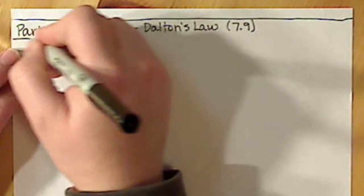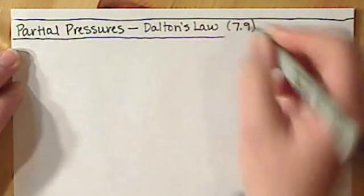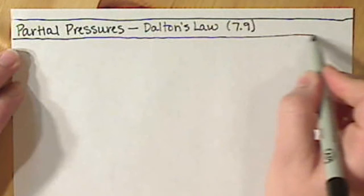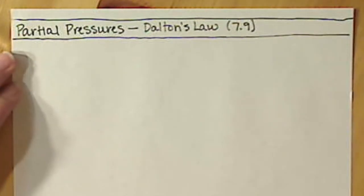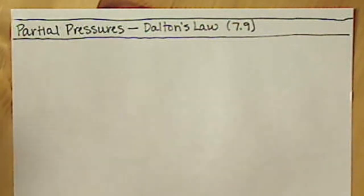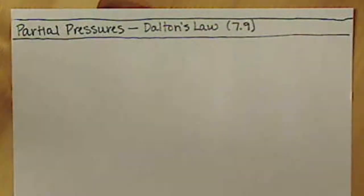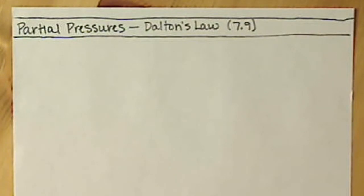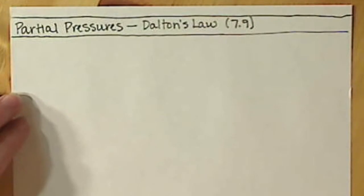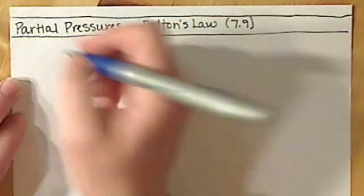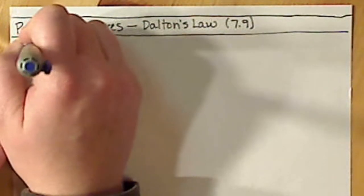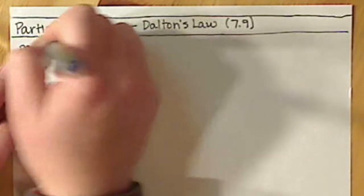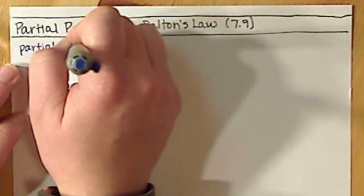We first learned about Dalton back in Chapter 3. He had our first atomic theory based on some empirical evidence — he was that English chemist. So his law is actually fairly simple and straightforward. But first, in order to understand his law, we want to know exactly what a partial pressure is.